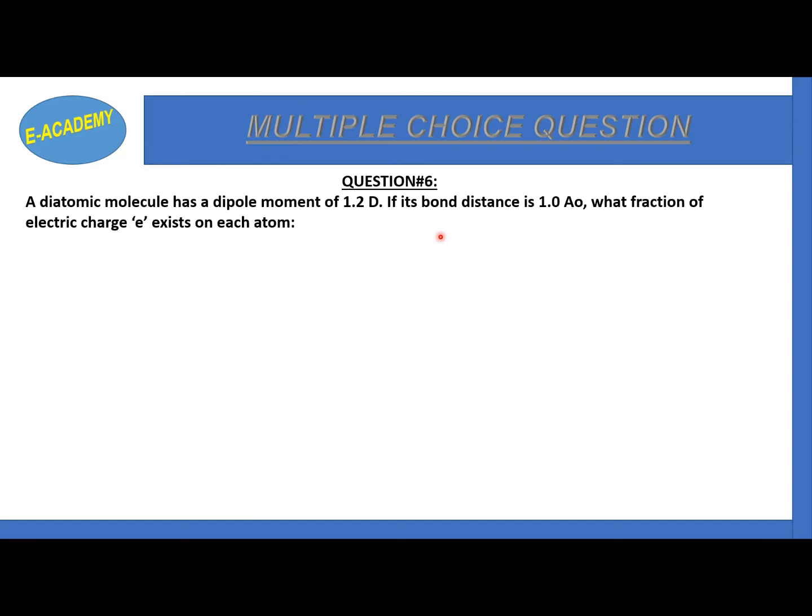We are asked how much of electric charge exists on each atom. Option A is 12% of e, B is 18% of e, C is 25% of e, D is 30% of e. Our correct option is C, 25% of e.